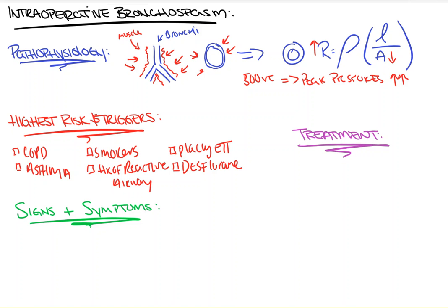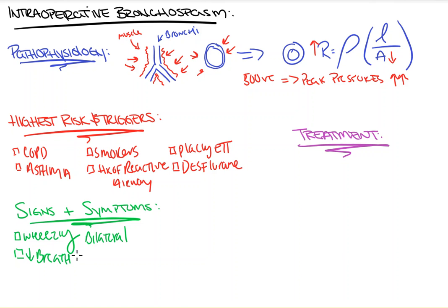What kind of signs and symptoms will we see if we suspect bronchospasm in the operating room? Since we should all be listening to our patients' lungs after the ET tube is in, we may hear wheezing. This will be bilateral, and we're going to have a decrease in breath sounds. This is a function of the way air moves through a compressed airway — it makes higher-pitched noises, just like turbulent blood flow through a vessel or valve.